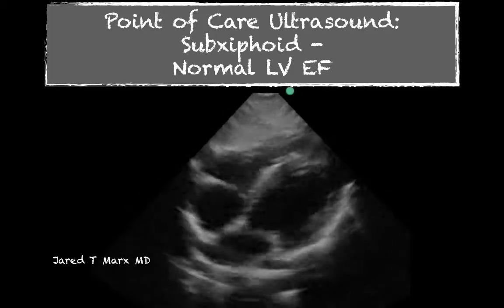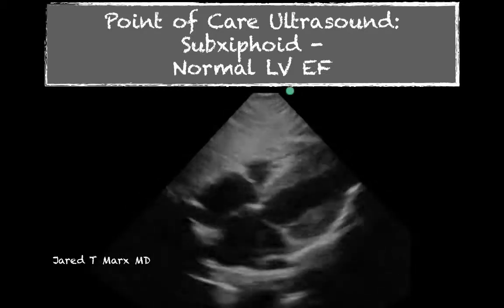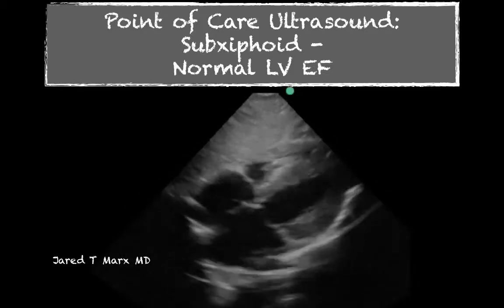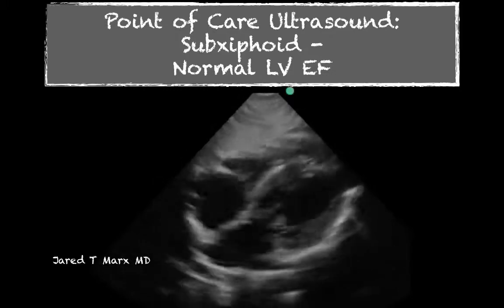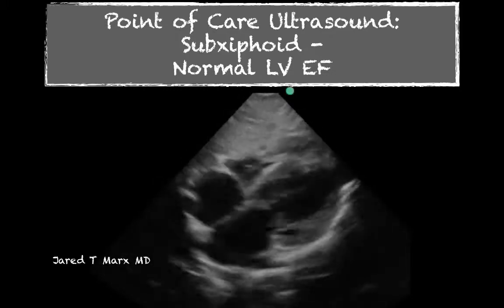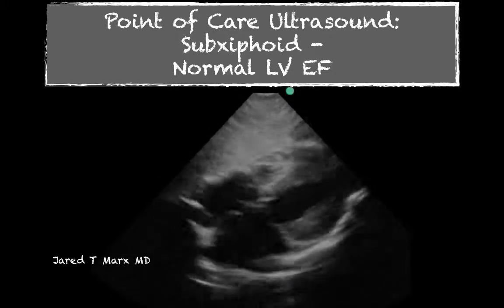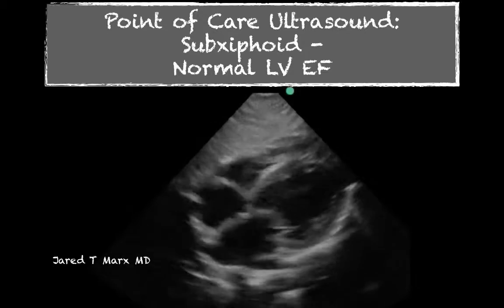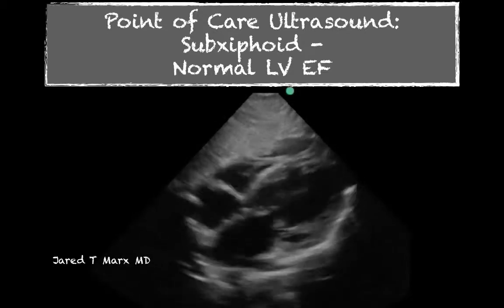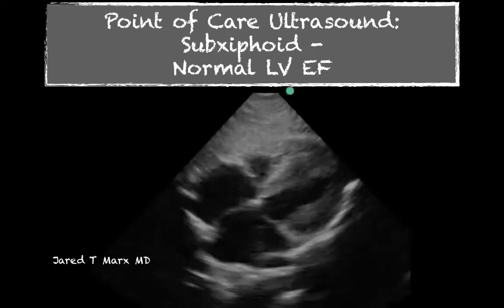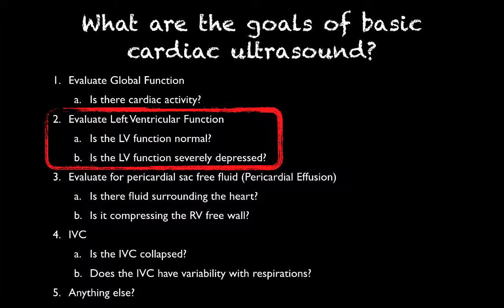Welcome back. We're going to take a look at the subxiphoid view on the cardiac exam. This is also a part that you could see on your FAST exam. We're going to look at three examples of a normal ejection fraction to review our binary questions, and in this case we're going to only look at the left ventricular function so that we can appreciate whether it is normal or not.